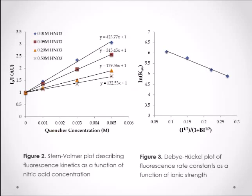Figure 2 illustrates the effect of different nitric acid concentrations on fluorescence levels. The Stern-Volmer equation, which compares the quantum yields of fluorescence measured with and without the quenching agent, is plotted here. In this case, the quantum yield accounts for the extent of de-excitation events that result from fluorescence.